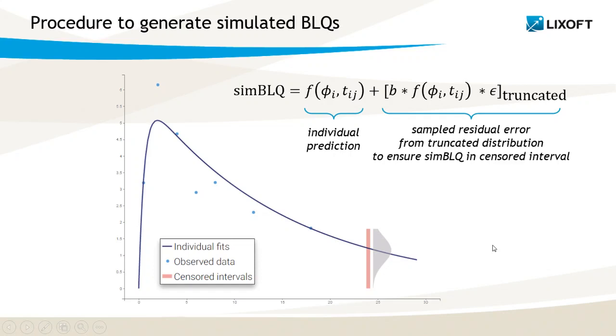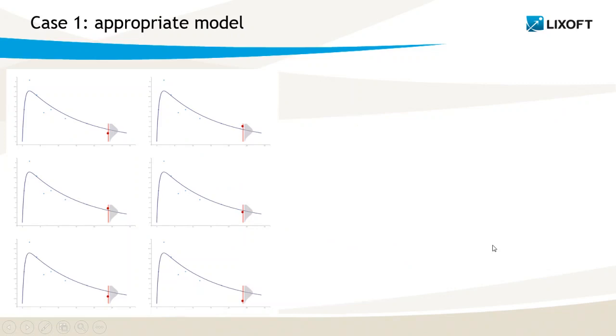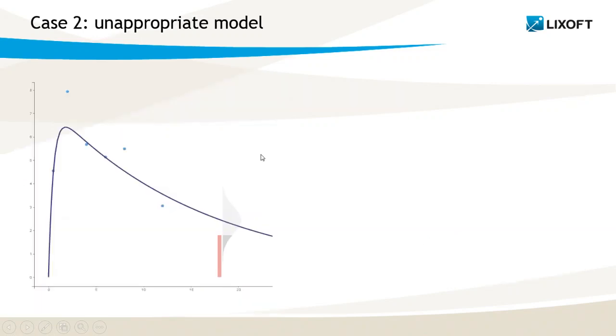Let me detail this with two different cases. In the first example here, our prediction goes through the censored interval, and then it does not really matter if we constrain the BLQ to be in the interval, as they would anyway have a high probability of being in that interval. So the simulated BLQ for each individual is sometimes above and sometimes below the prediction. And in this case, in the obs versus pred, the dots would be evenly distributed around the black line.